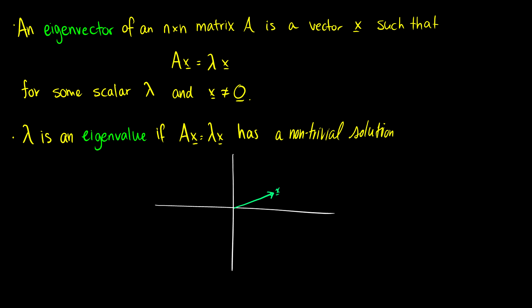It's time to finally introduce eigenvectors and eigenspaces. An eigenvector of an n by n matrix A is a vector x such that A times x is equal to lambda times x, where lambda is just some scalar. We also require that x is not equal to the zero vector.